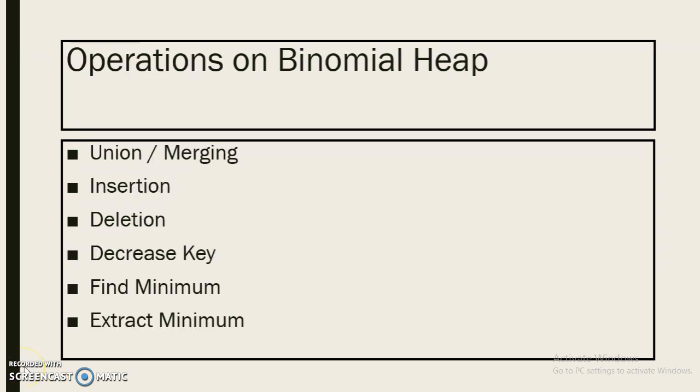In this video we will see six operations on binomial heap: first is union or merging, second is insertion, third is deletion, fourth is decrease key, fifth is find minimum, and sixth is extract minimum.